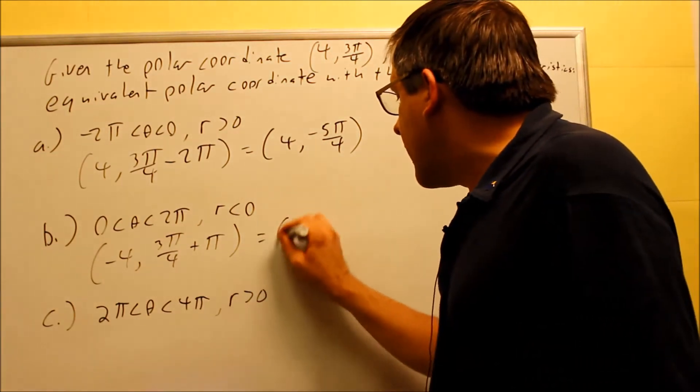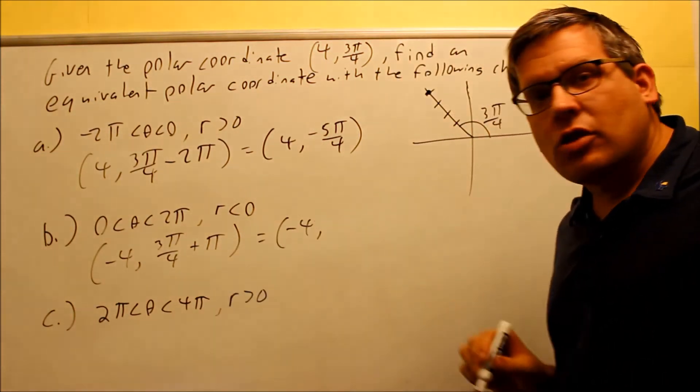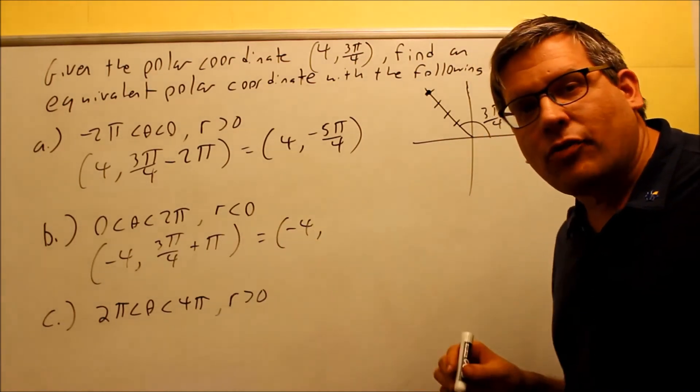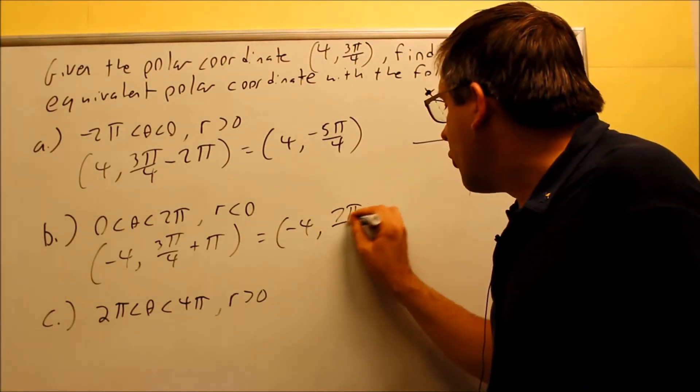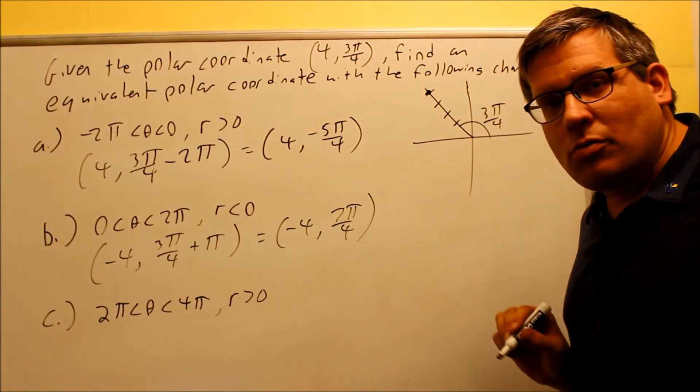When I do that, I get negative 4, and with common denominators, 3π/4 plus 4π/4 will give you 7π/4. Let's see if this one makes sense.